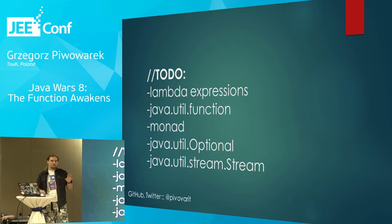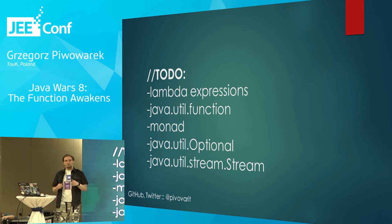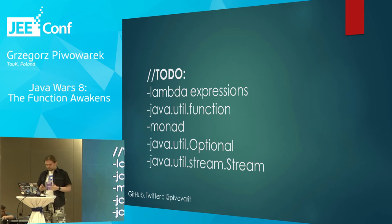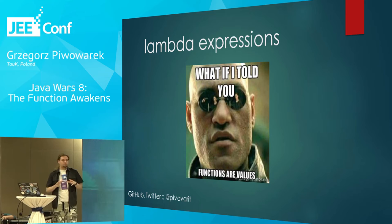So basically, what will we talk about today? We'll talk about the major breakthrough in Java — Lambda expressions. Then we'll look into the package java.util.function. Then we'll try to describe the very controversial design pattern called the monad. And then we'll take a look at two very popular tools that we have in Java 8. After this there will hopefully be some time for Q&A. Let's get this started.